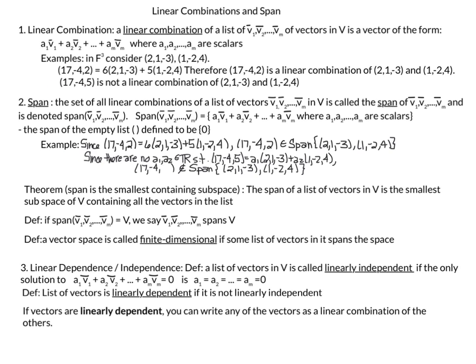The vector (7, -4, 5) is not a linear combination of (2, 1, -3) and (1, -2, 4), because there are no coefficients you can multiply by these vectors and add them together to get (17, -4, 5). Since it's not a linear combination, that means this vector is not in the span of (2, 1, -3) and (1, -2, 4).